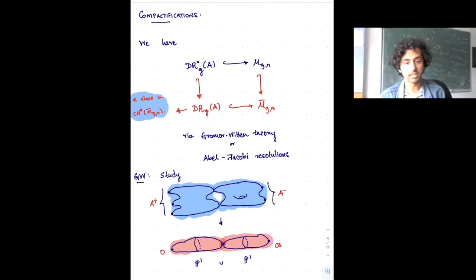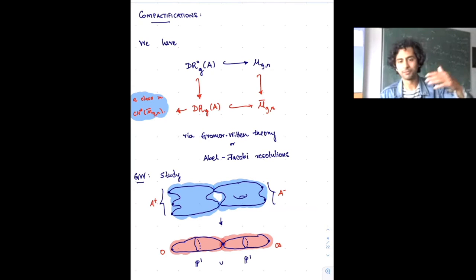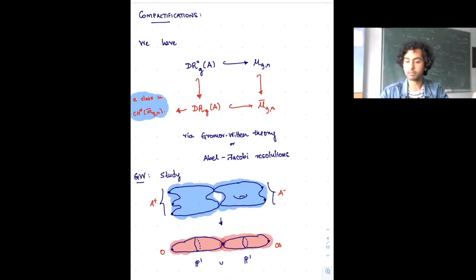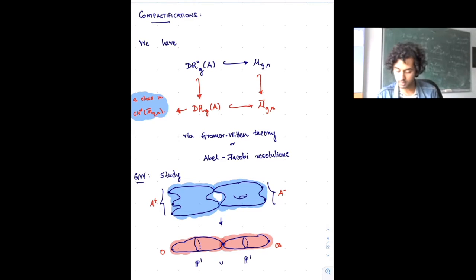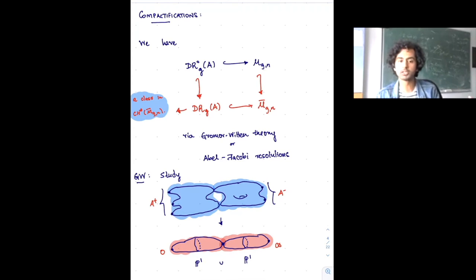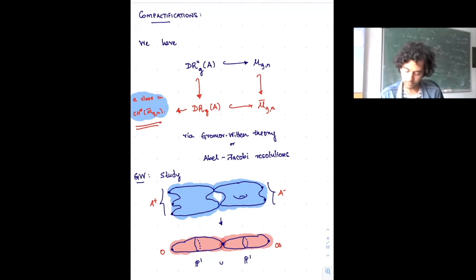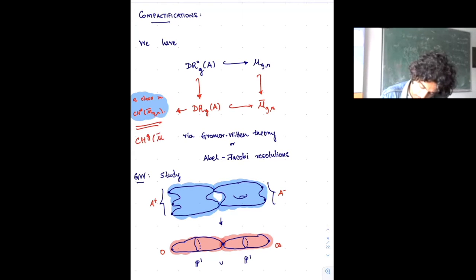Ultimately this produces a cycle — the double ramification cycle — which is the cycle of curves in M̄_{g,n} that admit maps to broken ℙ¹'s, unions of ℙ¹'s, with certain specified discrete data. Via Gromov-Witten theory it defines a cohomology class on the moduli space of curves. This class lives in the codimension g part of the cohomology of the moduli space of curves.